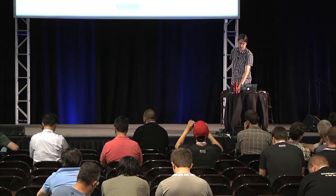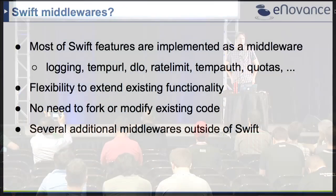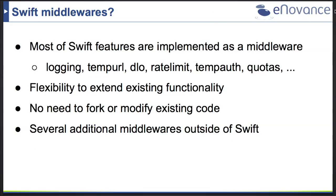So why do we want to write Swift middlewares? If you look into the Swift proxy server configuration file, you will see that most of the features are already implemented as middleware. For example, we have things like logging, temporary URLs, form post, dynamic large objects, authentication middlewares, and quota middlewares. These middlewares give you great flexibility to extend your existing functionality.